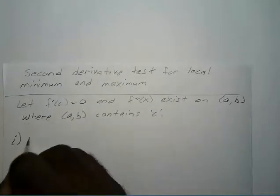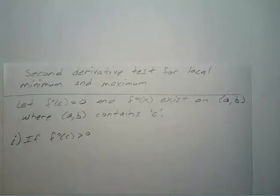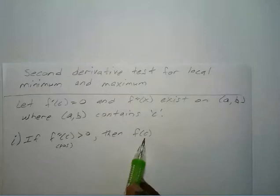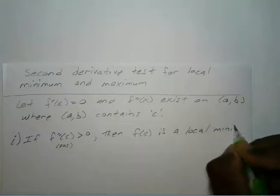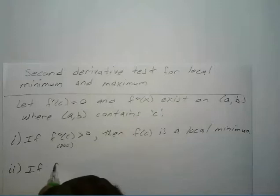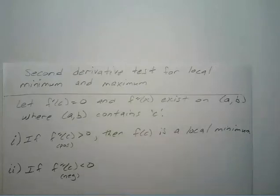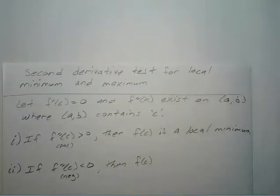Number one: if your second derivative at point c is greater than zero, or positive, then your function at point c is a local minimum. Second: if your second derivative at c is less than zero, or negative, then your function at point c is a local maximum.